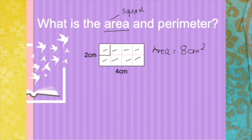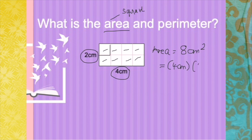So if we will solve this, all you need to do is multiply the length 4 centimeters and the width 2 centimeters, which also gives you 8 centimeters square.